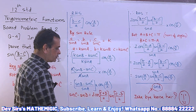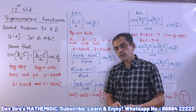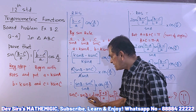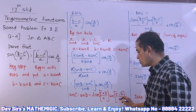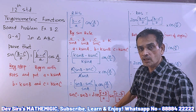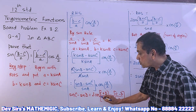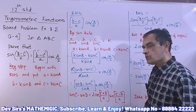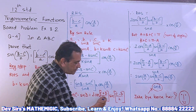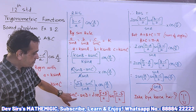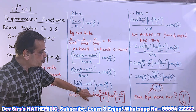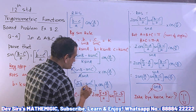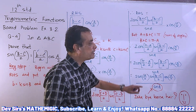Now, certain 11th standard formulae are needed here. sin C minus sin D equals 2 cos((C+D)/2) sin((C-D)/2). Don't cancel the 2 — it is inside the angle, so you cannot cancel it. Applying this to sin B minus sin C: we get 2 cos((B+C)/2) sin((B-C)/2), all over sinA, times cos(A/2).